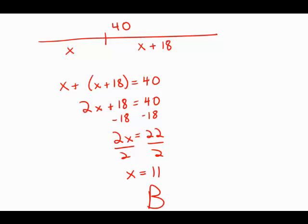The shorter length of the rope is 11. It turns out that the longer piece of the rope is 29, which is exactly 18 feet longer.